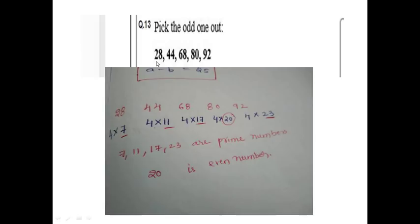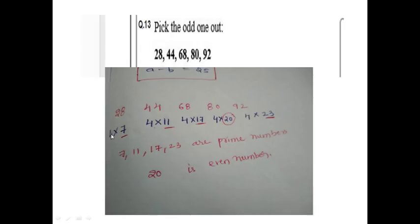Pick the odd one out from the data: 28, 44, 68, 80, 92. You have to find which number is different. So for 28: 2+8=10, factors give 4×7=28 → factors 7, 11, 17, 23 — these are prime numbers related to the others. But 80 is different because one number here is an even number that does not follow the same pattern. So the answer is 80.